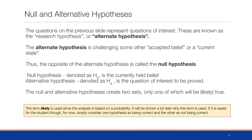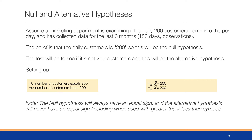The null and alternative hypothesis create two sets, only one of which will be likely true. The term 'likely' is used since the analysis is based on probability. For now, simply consider one as being correct and the other as not being correct, though we will refine that later.